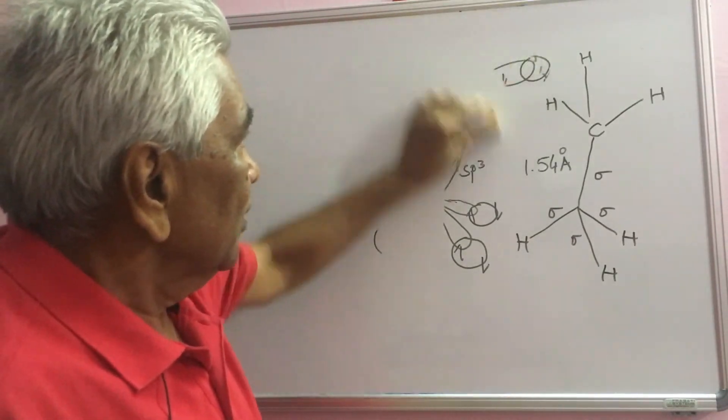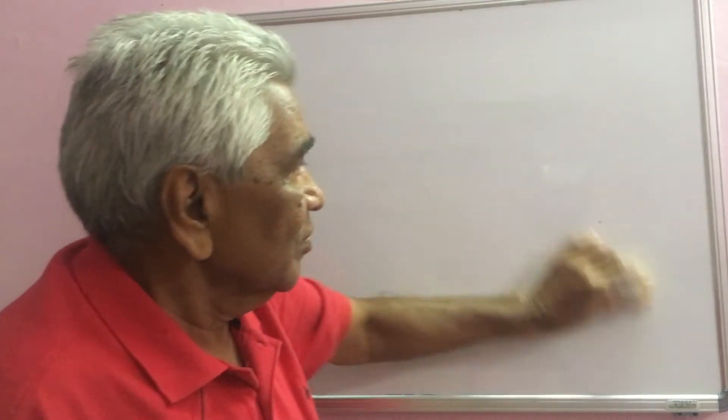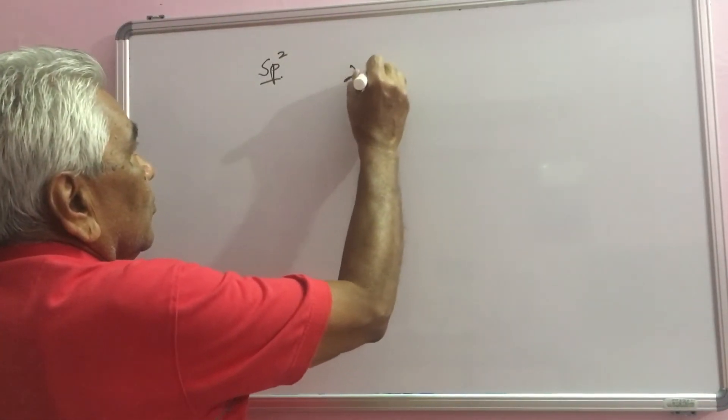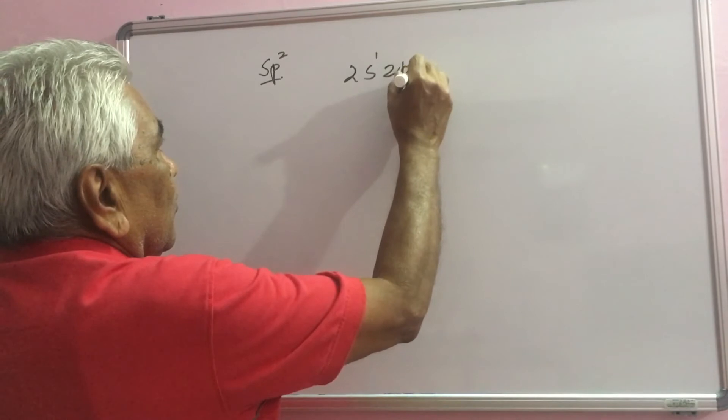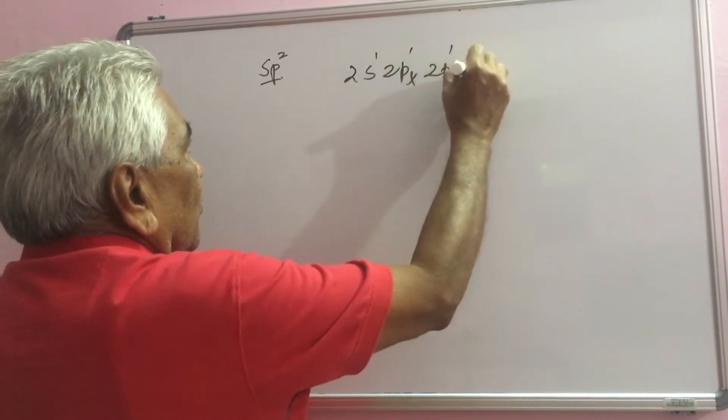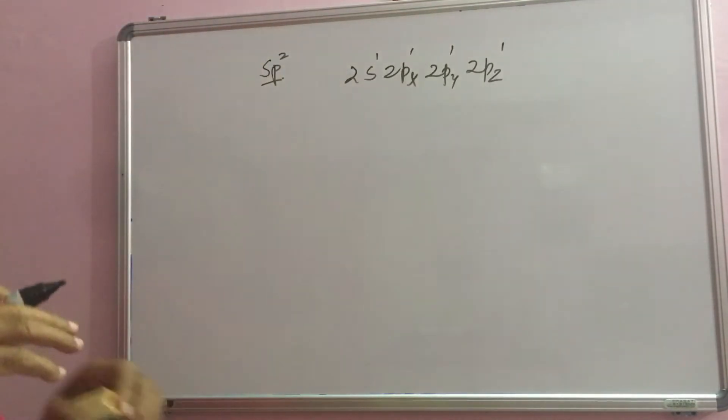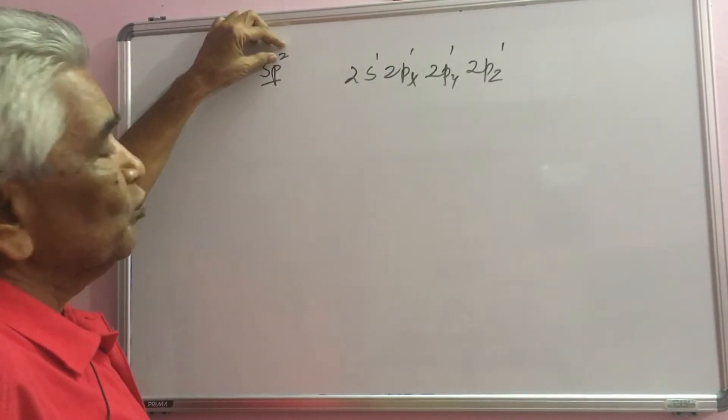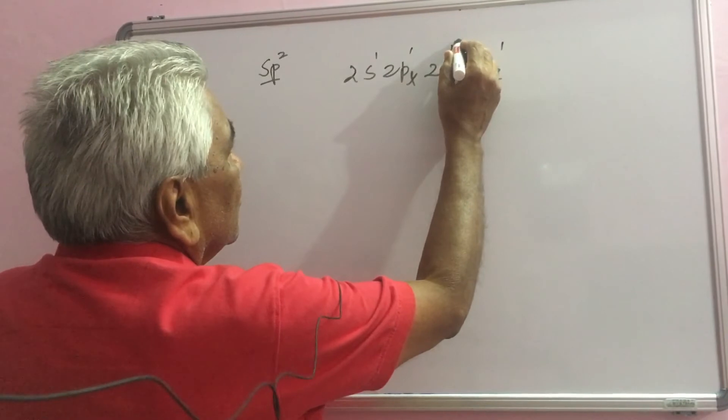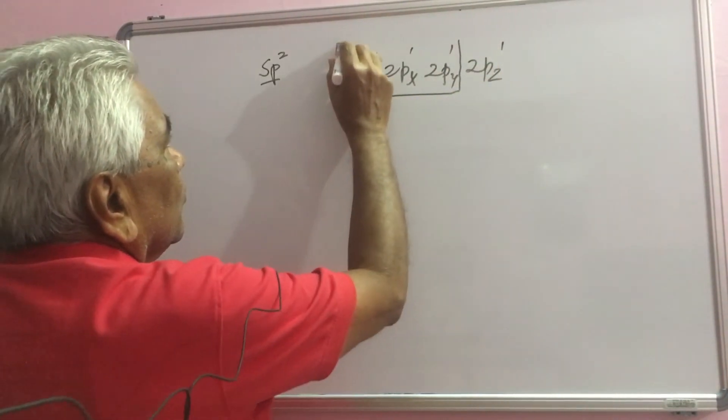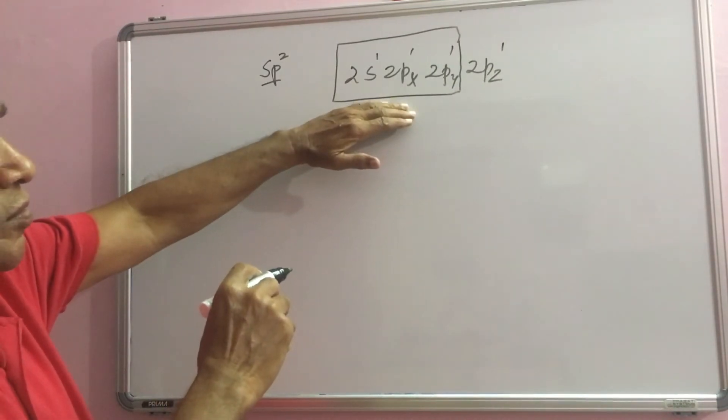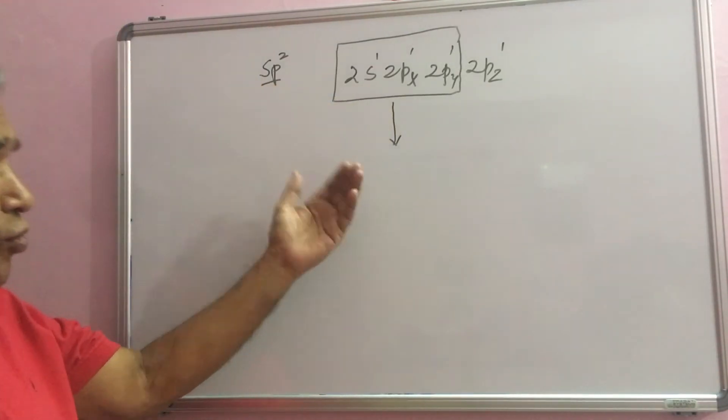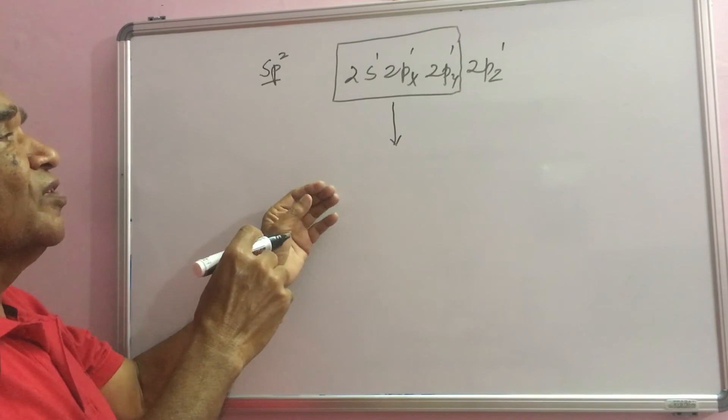Let us see now sp2 hybridization. As the name suggests, 1s and 2p orbitals undergo blending. These 3 orbitals will form 3 new orbitals known as sp2 hybrid orbitals.